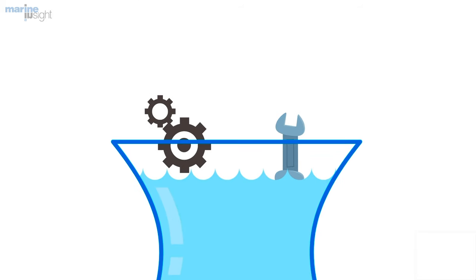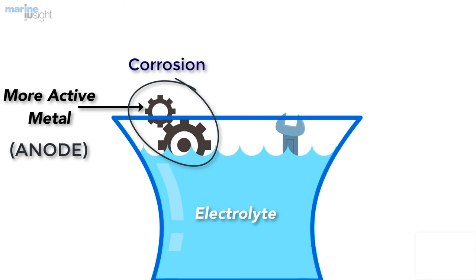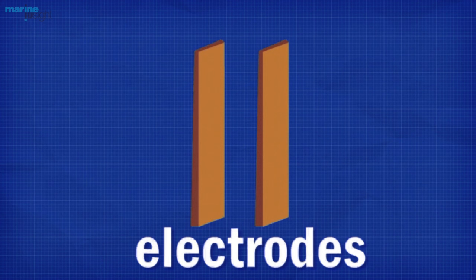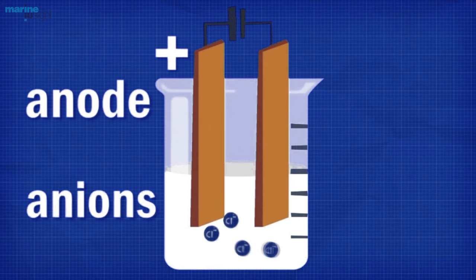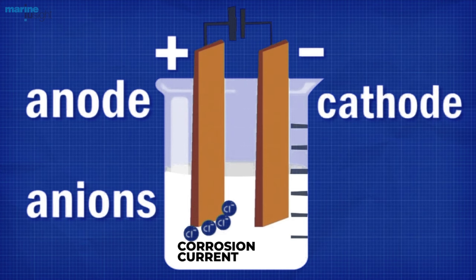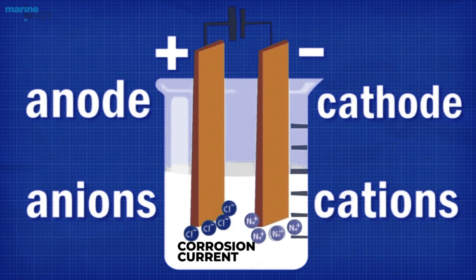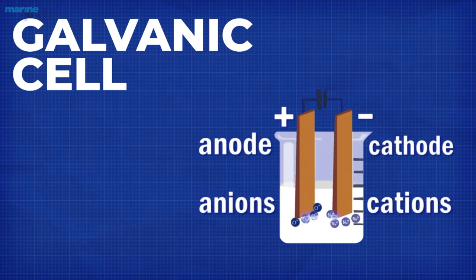When two dissimilar metals are in contact with each other in the presence of a corrosive medium or electrolyte, the more active metal in the galvanic series acts as an anode and undergoes corrosion, while the less active metal acts as a cathode. This electrical current is referred to as corrosion current and is nothing but a metal ion and electron transfer process from the anode, which dissolves and passes into the solution. This simple cell where the corrosion process takes place is called a galvanic cell.